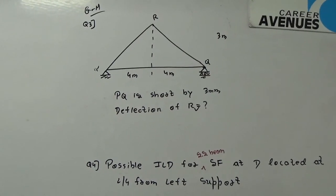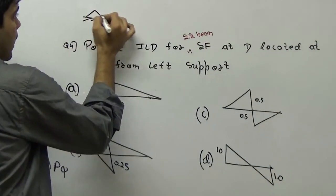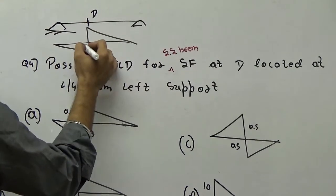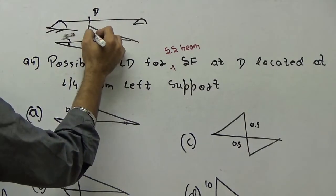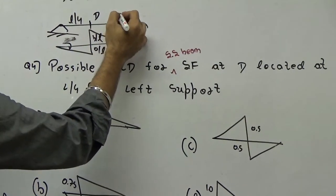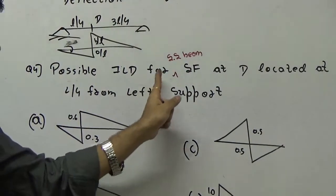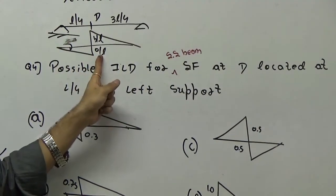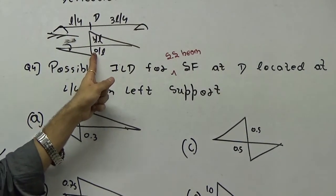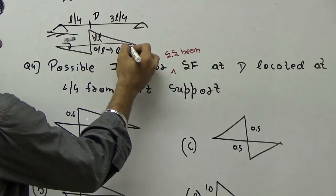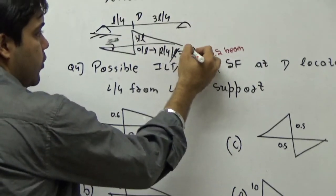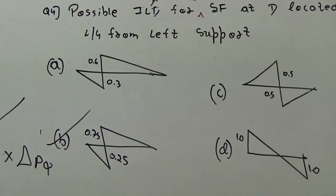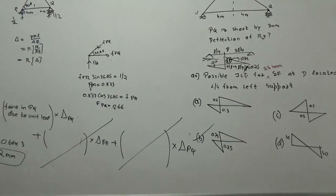Now, last problem is again a simple one. It was just asked that if you refer to my influence line diagram, the shear force at any section D is like this. And this ordinate is A by L and this is B by L. So, this is saying this is L by 4 and this is 3L by 4, right? So, he's saying possible ILD for the simply supported beam shear force at D located at L by 4 from left support. So, L by 4 from left support, this will be A by L. So, here A is L by 4. So, what will be this value here? It will be L by 4 upon L. So, L gets cancelled. Your value is 0.25. And this value will be 0.75. So, the option number B is correct in this case. So, this completes the 2014 set 1 problem. The next video we will see 2014 set 2 problems on structures.